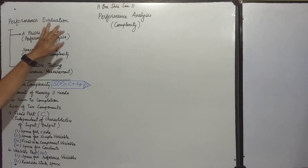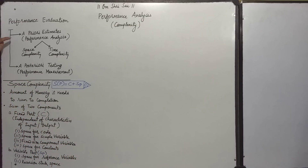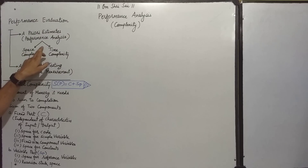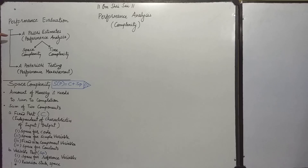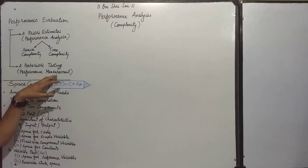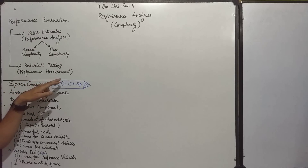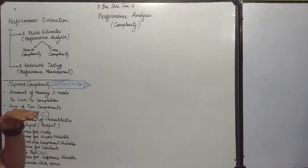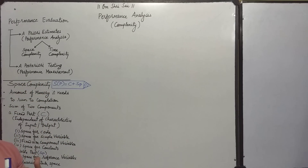The performance evaluation of any algorithm can be classified into two different types. One is a priori estimation, known as performance analysis, which is broadly divided into two parts: space complexity and time complexity. The other part is a posteriori testing, known as performance measurement. Performance analysis is done before implementation, while performance measurement is done after the program is developed and tested on computers.